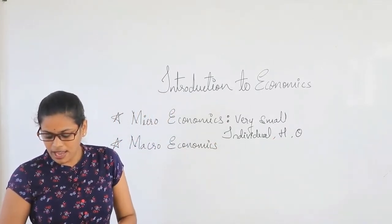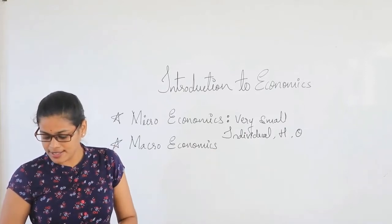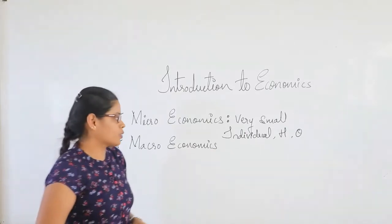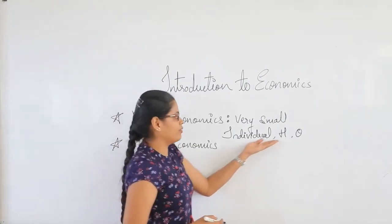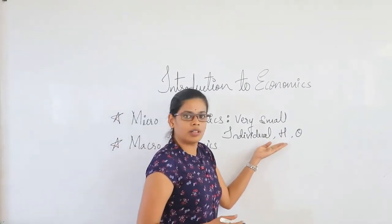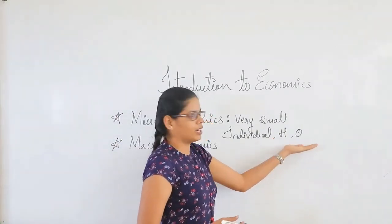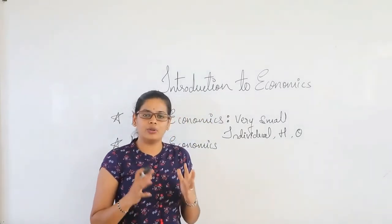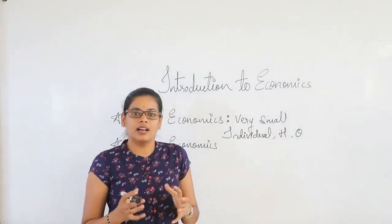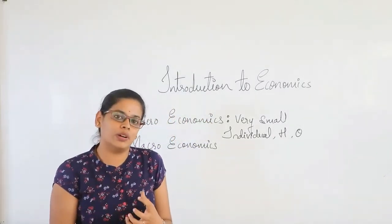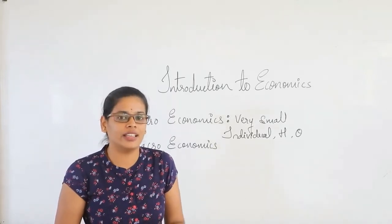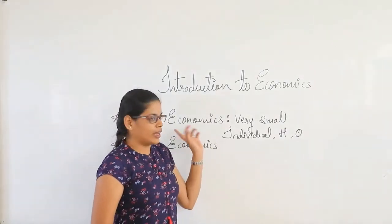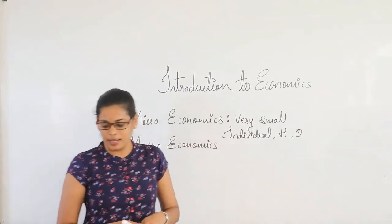You have to buy certain goods and services to satisfy your wants. When we are talking about an individual, a household or a family, or an organization, we have to discuss how they are going to satisfy their unlimited wants with limited resources. That comes under microeconomics.